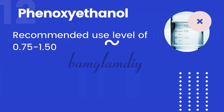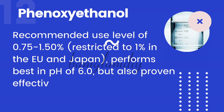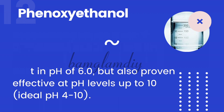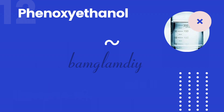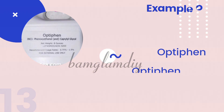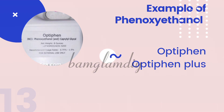Next, let's talk about phenoxyethanol, also called glycol esters. Their recommended usage rate is 0.75 to 1.5 percent, but it is restricted to 1 percent in Europe and Japan. It performs best at pH 7 but is proven effective up to pH 10. The effective pH range is 4 to 10. This is where your Optiphen falls — when you buy phenoxyethanol in the market you are actually buying Optiphen.